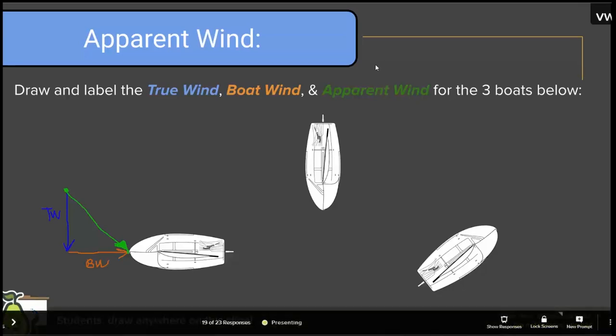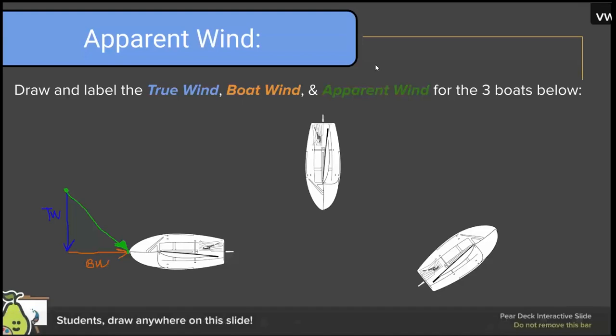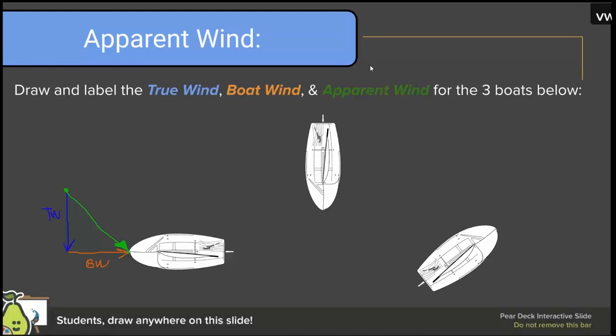A student asks whether the magnitude of the true wind would be way bigger. The boat wind would probably be way smaller — in a typical situation, a boat won't sail as fast as the wind, so the true wind would be bigger than the boat wind. But that's not the point of this exercise since no information was given about how fast anything was moving.